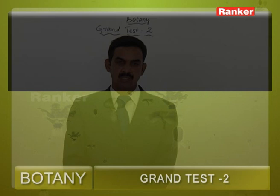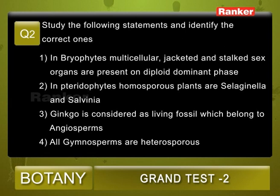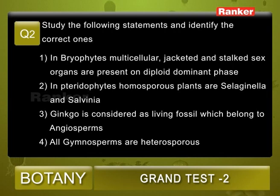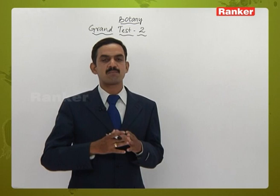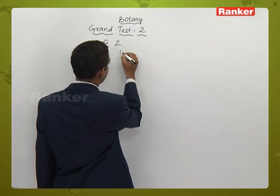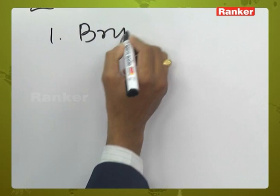Question number two: study the following statements and identify the correct ones. One — in bryophytes, multicellular jacketed and stalked sex organs are present on the diploid dominant phase. Two — in pteridophytes, homosporous plants are Selaginella and Salvinia. Three — Ginkgo is considered a living fossil belonging to angiosperms. Four — all gymnosperms are heterosporous.